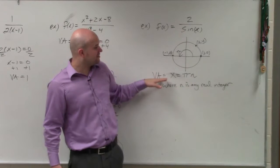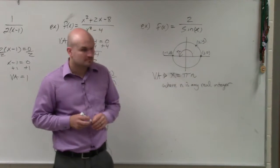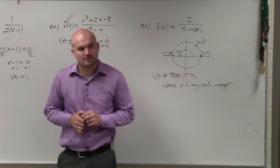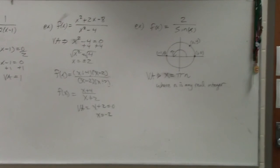It's not removable, so therefore it's our vertical asymptote. Anybody have any questions on that? Okay. Let's talk.